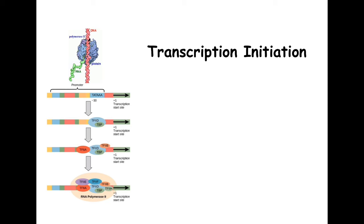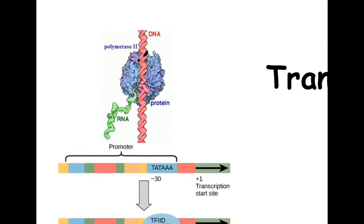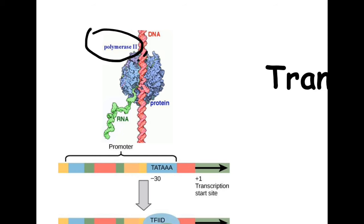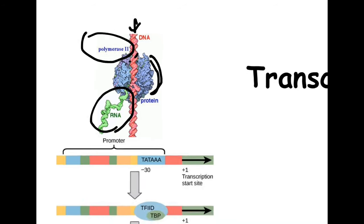Let's talk about the primary RNA polymerase in eukaryotic transcription. This is different from what we see in prokaryotes. The eukaryotic RNA polymerase is RNA polymerase 2 — that is the main one. Here you see the DNA serving as the template, the polymerase associating with the DNA, and the RNA transcript being made.